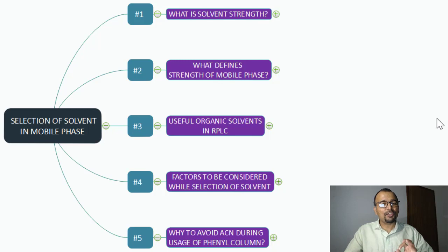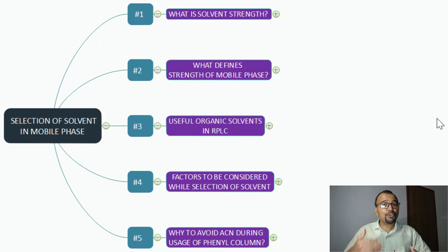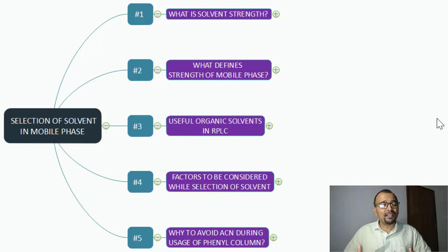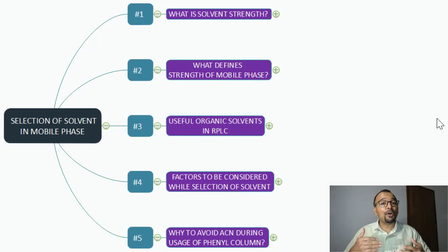The first point is solvent strength. To decide on the selection of the solvent during mobile phase preparation, you need to understand the requirement of the solvent. The requirement of the solvent is determined by the elution of the analyte, which strongly depends on the interaction of the analyte onto the stationary phase and the strength of the solvent. The strength of the solvent plays a very important role in allowing the analyte to interact for more or less time with the stationary phase.